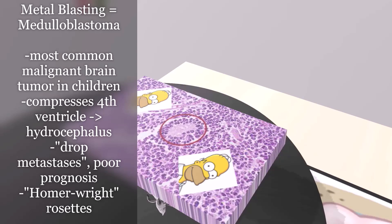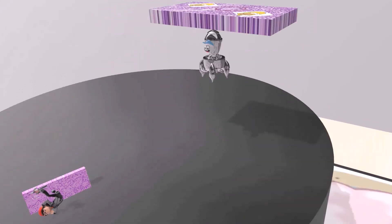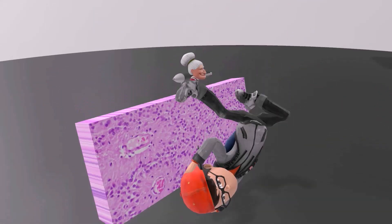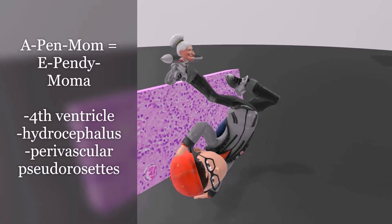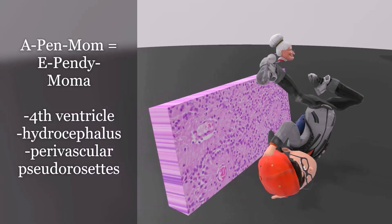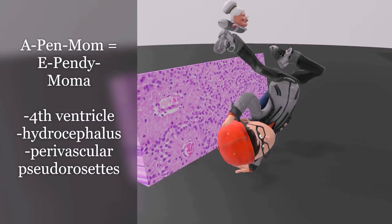Let's move on now to ependymoma, represented by this dancer who has a pen of his mom — pen mom for ependymoma. This is most commonly found in the fourth ventricle. The water shooting from his head again reminds us of hydrocephalus. The histologic picture shows perivascular pseudorosettes, which is when tumor cells surround blood vessels, and this should be associated with ependymoma.